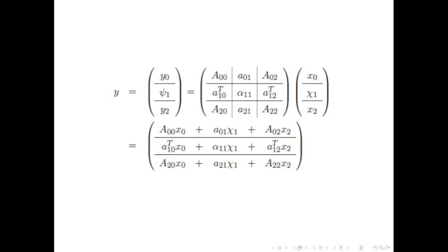This means that the first subvector of y, which we denote y0, equals the dot product of the first row of symbols with the subvectors of x: A00*x0 + A01*x1 + A02*x2. Similarly, the other components of y are symbolically computed.